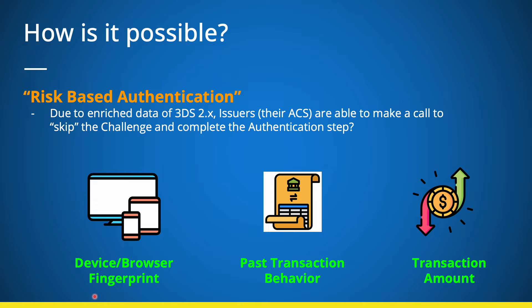Some of the data points that the issuer has at its disposal to take a decision to skip the second factor: the issuer has access to device and browser fingerprint, past transaction behavior of the customer, the merchant and the transaction amounts, etc.